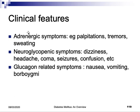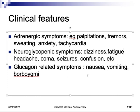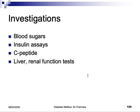The adrenergic symptoms include palpitations, tremors, sweating, anxiety, and tachycardia — these are all due to epinephrine release. Neuroglycopenic symptoms include dizziness, headache, coma, seizures, and confusion. Patients also feel weak and fatigued.